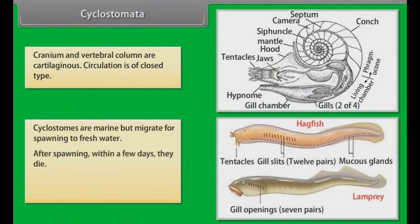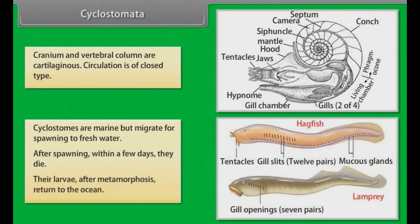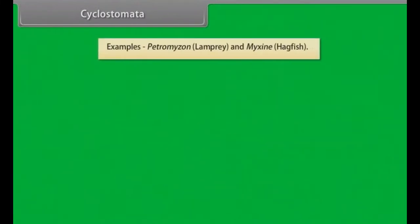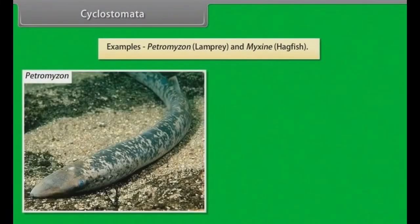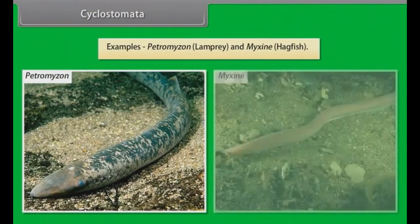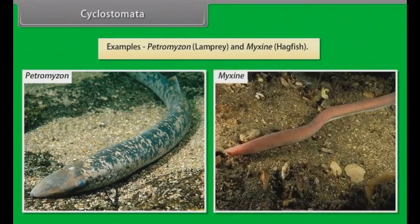Cyclostomes are marine but migrate for spawning to fresh water. After spawning, within a few days they die. Their larvae after metamorphosis return to the ocean. Examples: Petromyzon (Lamprey) and Myxine (Hagfish).